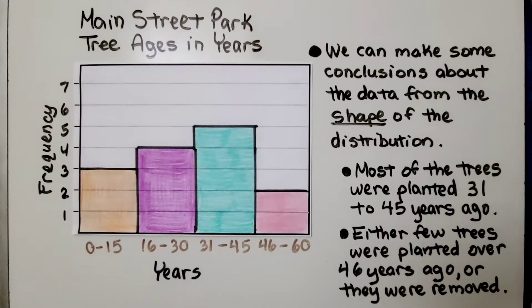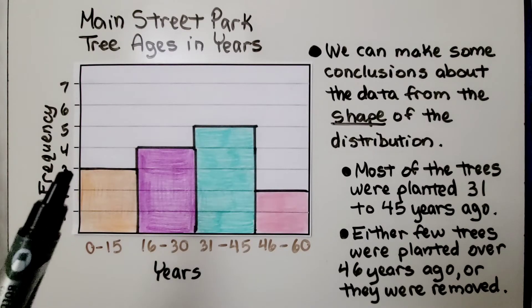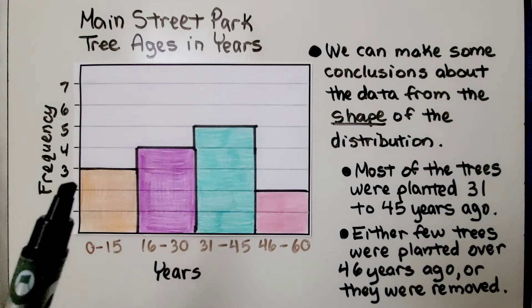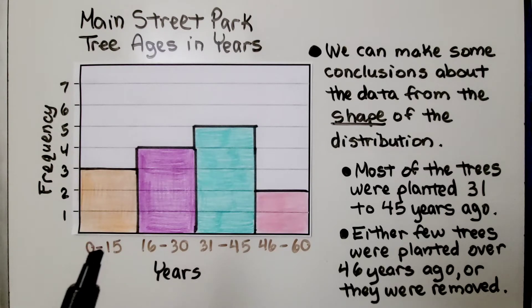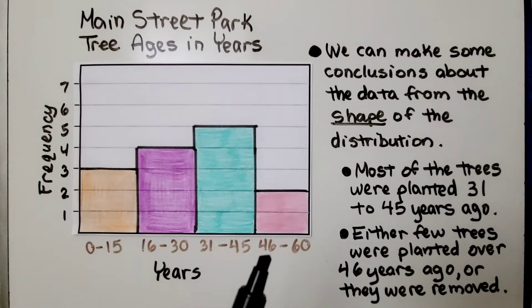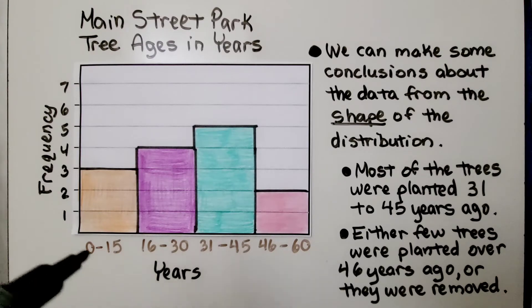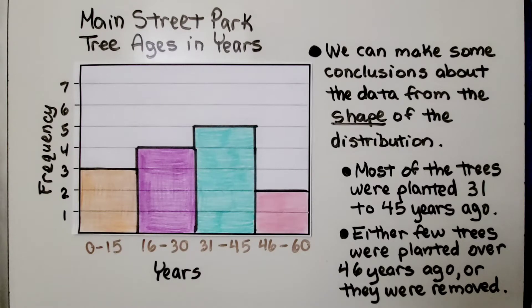Let's take a look at this histogram. It's titled Main Street Park Tree Ages in Years. And it's got 0 to 15, 16 to 30, 31 to 45 and 46 to 60. So those are the years and the frequency shows how many trees fall into those intervals. So we can make some conclusions about the data from the shape of the distribution.